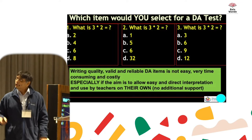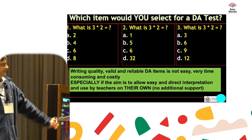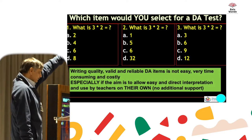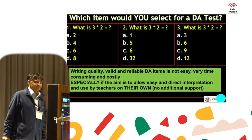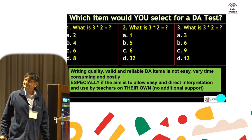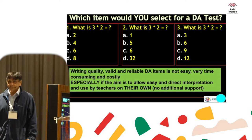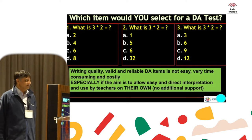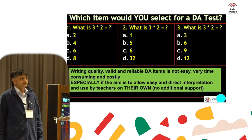Quick question: which item would you select for a diagnostic assessment test — one, two, or three? They're all the same questions; the distractors are separate. All written with high-quality item writing principles. Which item would you select?